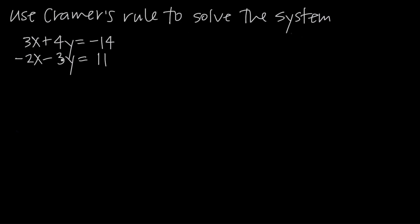Now in the system we've been given, we have two equations: 3x plus 4y equals negative 14, and negative 2x minus 3y is equal to 11. If we want to use Cramer's Rule to solve it, what we're interested in is the coefficients on each of these variables and the values on the right-hand side — these constant values, or the solution values.